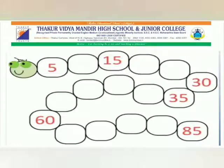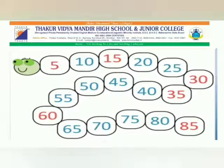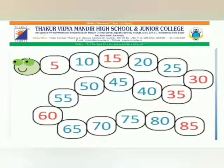Look at the caterpillar. A few numbers are missing in it. Let's count the numbers in steps of 5. So children, if we move from number 5 by counting, we get 10, 20, 25. Now, which is missing? 40, 45, 50, 55, 65, 70, 75, 80. Very good. Perfect.